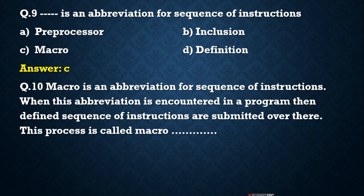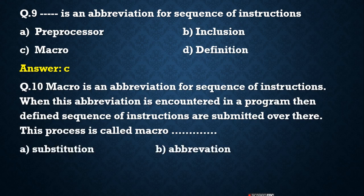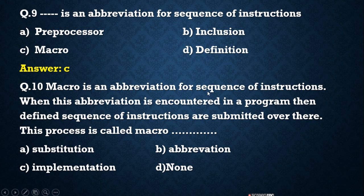Question 10: A macro is an abbreviation for a sequence of instructions. When this abbreviation is encountered in a program, the defined sequence of instructions is substituted there. This process is called — options: A) substitution, B) abbreviation, C) implementation, D) none. Read the statement carefully, as exams may ask questions on either part of it. The correct answer is A, macro substitution.